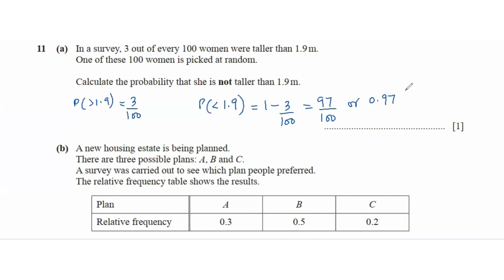You subtract the probability of that other event happening from 1 to get the probability of the event that is not happening.